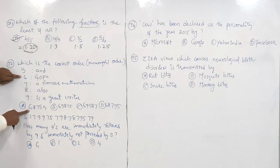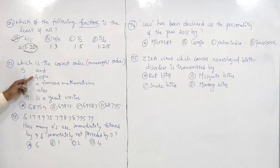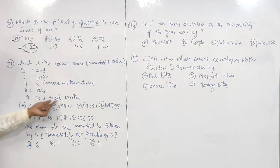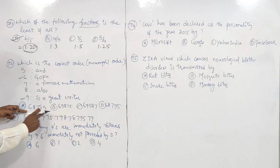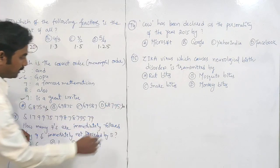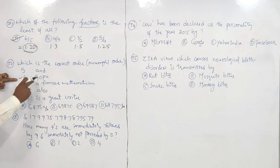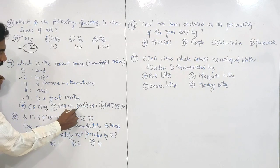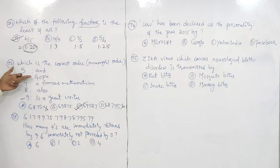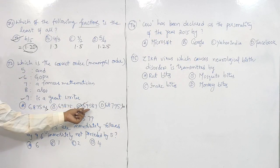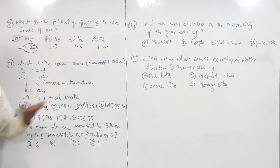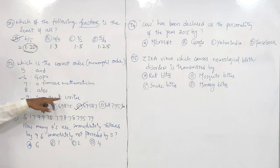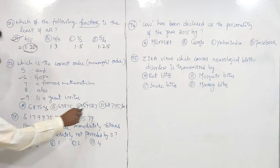Question 72: form a correct meaningful sentence. Let us start — 'Goku is a great writer.' Checking: sentence 6-9-5-8-7: 'Goku is a great writer and also a famous mathematician.' Yes, that is correct. Option C is the right answer.